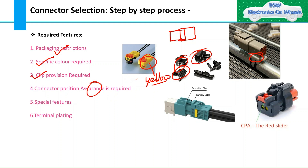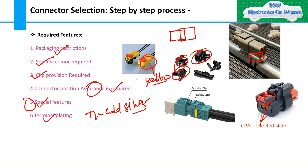The fourth packaging feature is Connector Position Assurance (CPA). CPA provides a secondary retention mechanism to ensure the connector is fully mated. Details on CPA and TPA have been covered in a previous inline connector video. Additionally, you need to consider terminal plating — whether the terminal should be tin-plated, gold-plated, or silver-plated — and verify availability from the connector supplier.